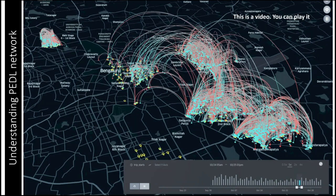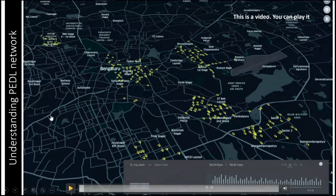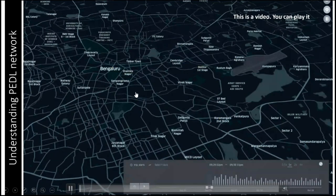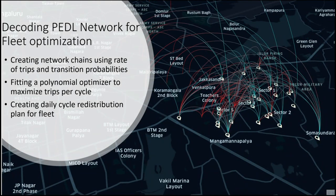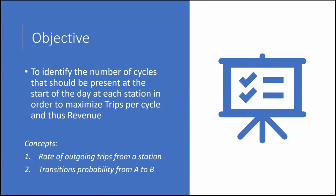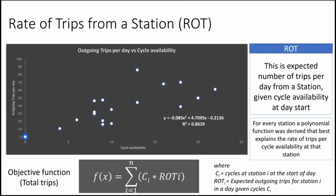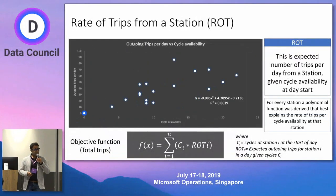At the larger scale you understand that things need to be optimized further — maybe we need to shut down a few areas and place more bikes in others. So how do you do that? Let's understand how we decode a network for fleet optimization. There are two concepts: first is Rate of Trips, called ROT — the rate of outgoing trips. Second is the concept of transitional probability from station A to station B.